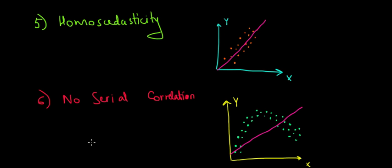Let's have a look at the last Gauss-Markov assumptions: homoscedasticity and no serial correlation. What does homoscedasticity mean? That means a constant variance.